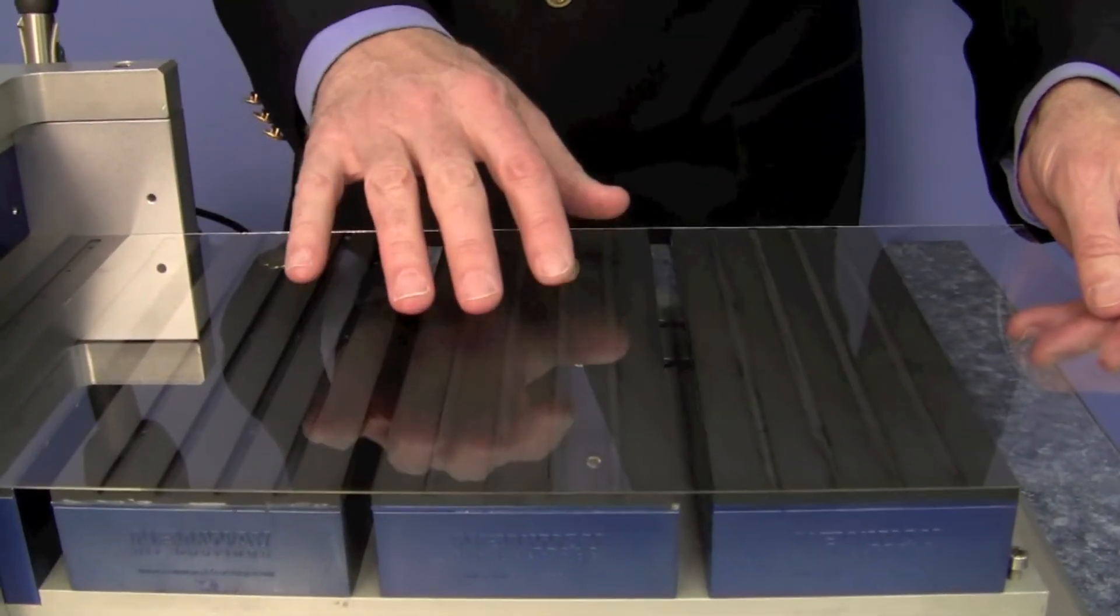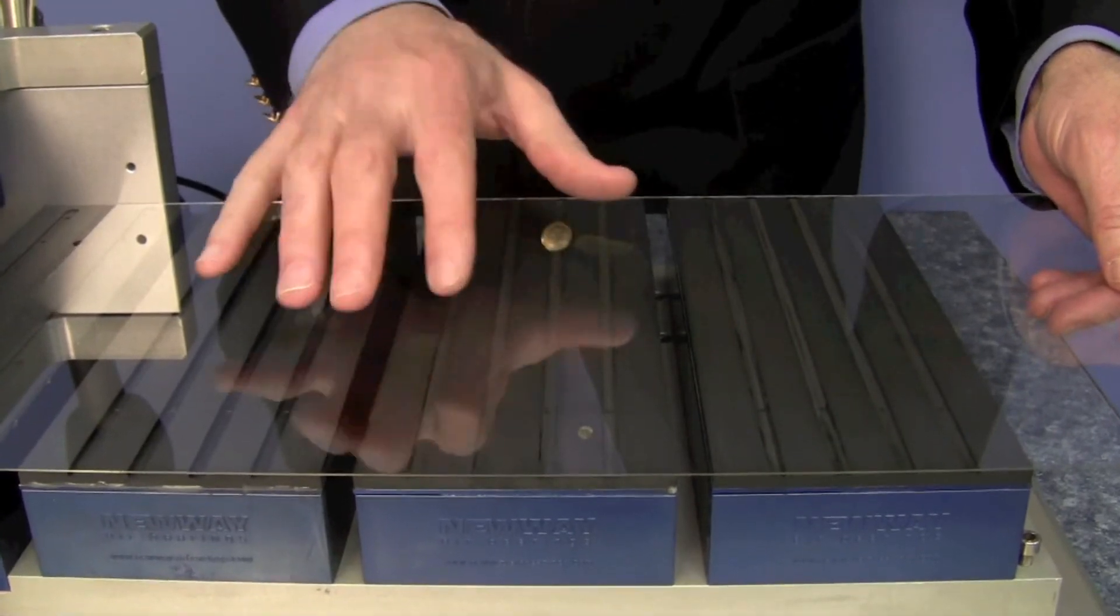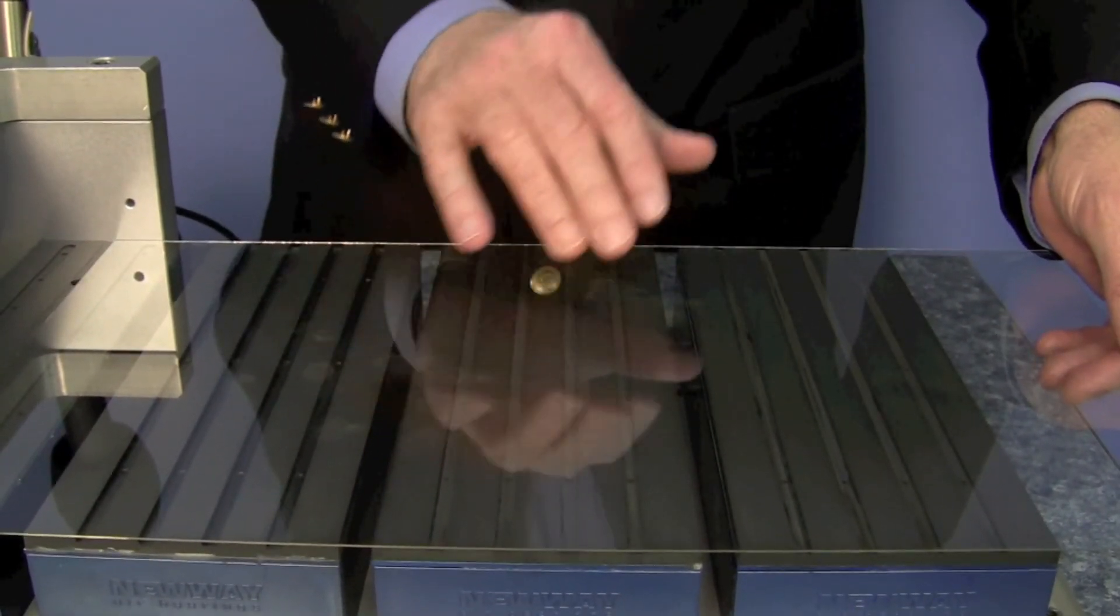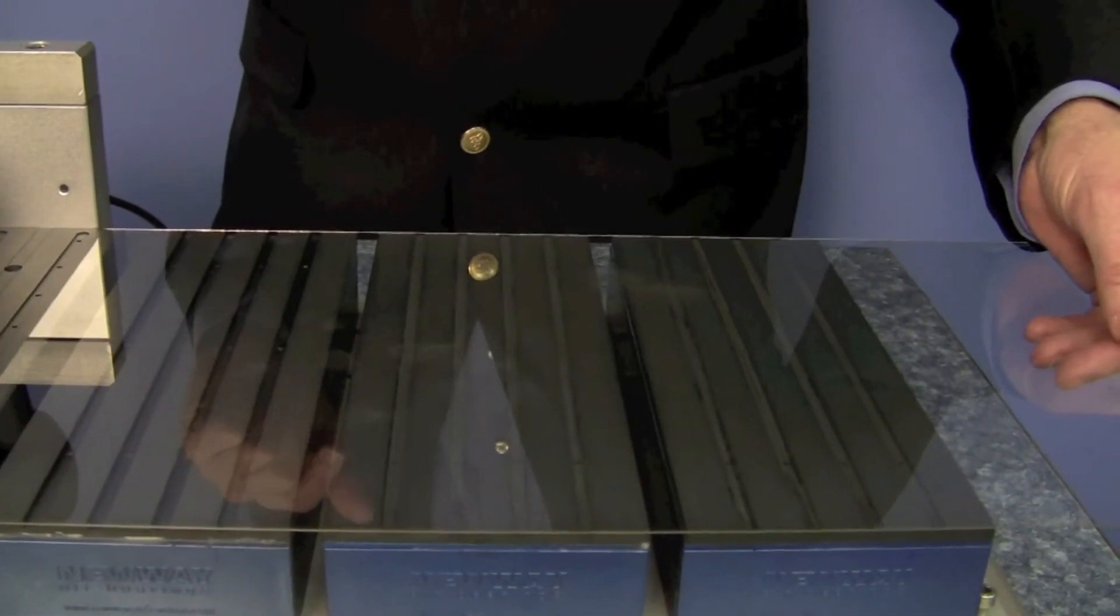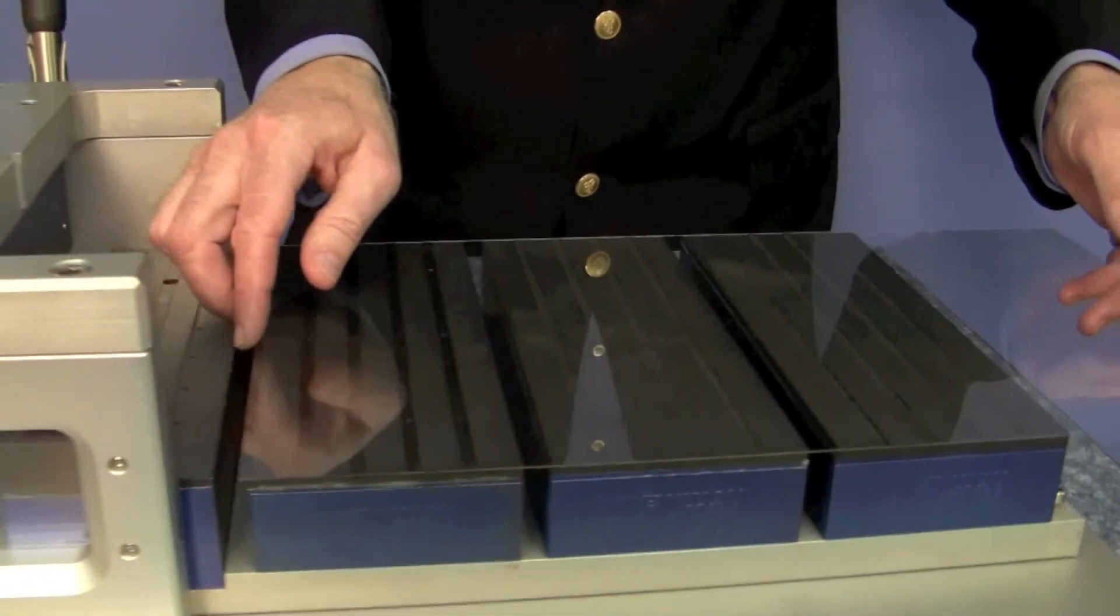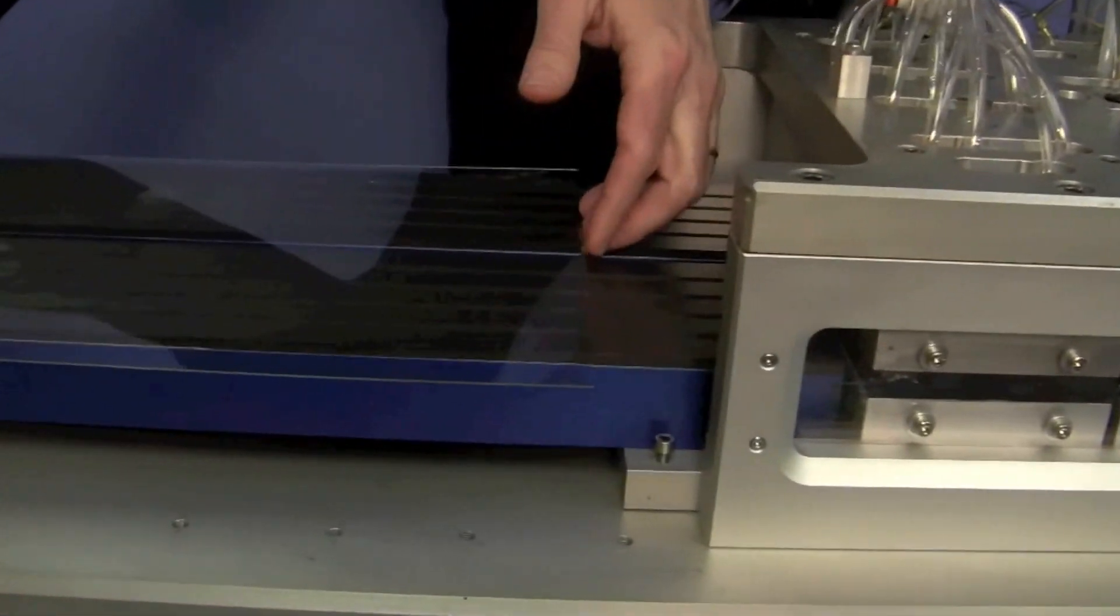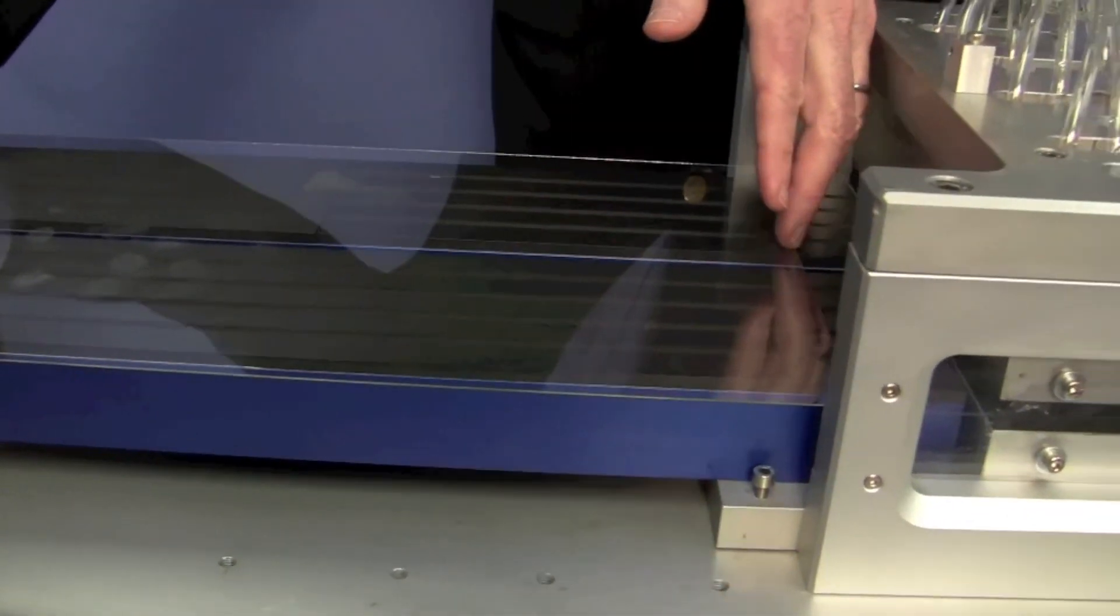So now what I'm going to do is take my fingers and put some smudges, some fingerprints on here. These organics are some of the hardest stuff to try to get off of flat panel glass. I'll pick this up now and set it down on the input side and we'll slide it in.